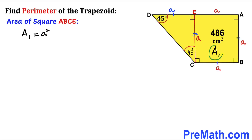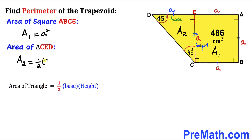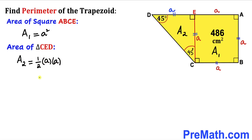Now let's calculate the area of triangle CED. Recalling the area of a triangle formula: area equals one-half times base times height. Since this triangle is a right triangle, the height is a and the base is a as well. So the area of triangle CED — represented as A₂ — equals one-half times a times a, which simplifies to a squared divided by 2.